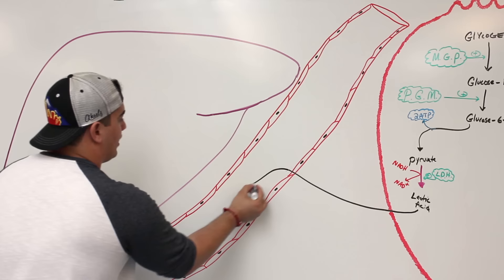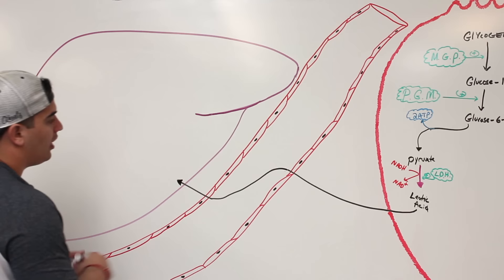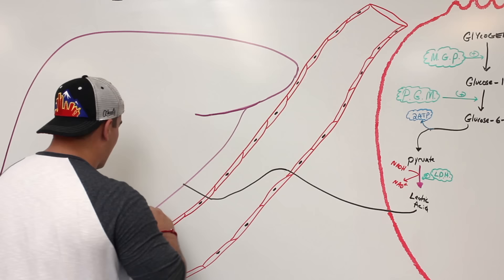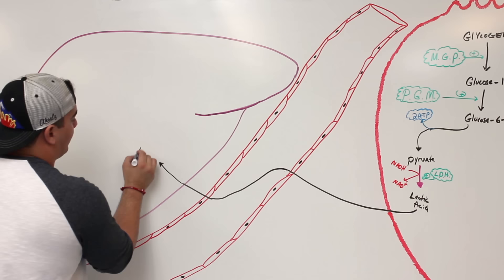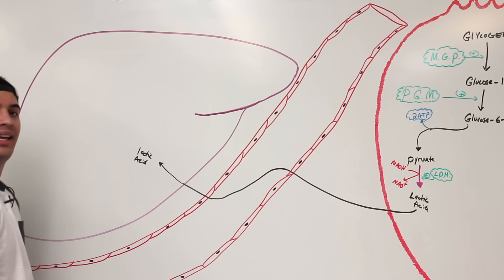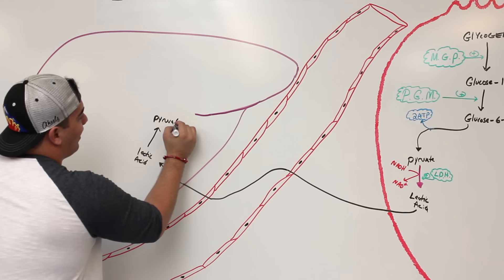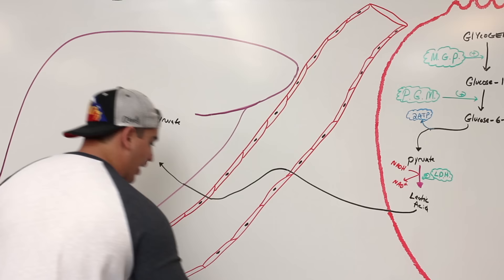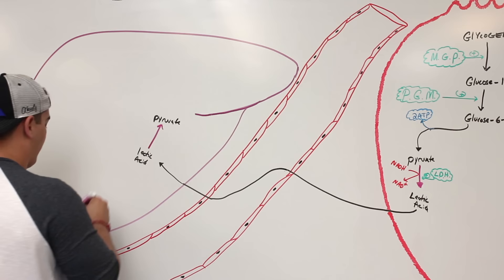The lactic acid travels through the blood and is taken up by the liver. Once in the liver, the lactic acid can be reconverted back into pyruvate using lactate dehydrogenase, which is also present in the liver and many other tissues. In this direction, the pathway runs in reverse, taking NAD+ and generating NADH.